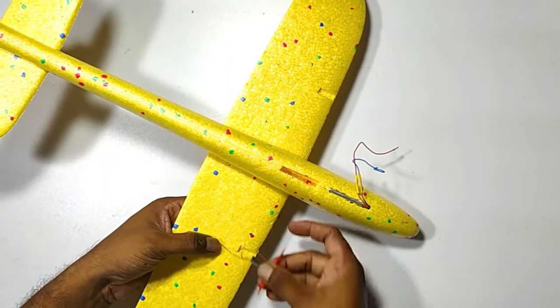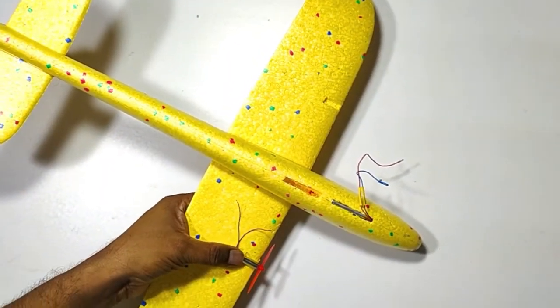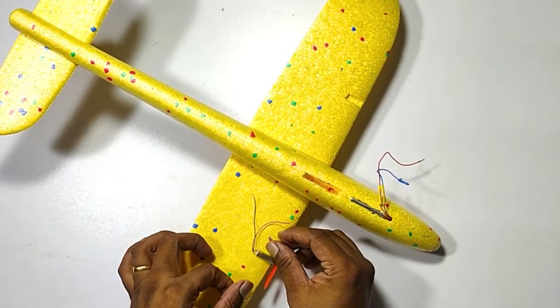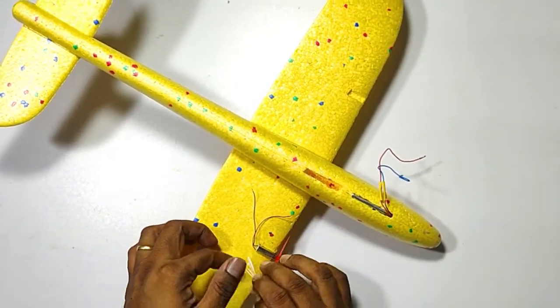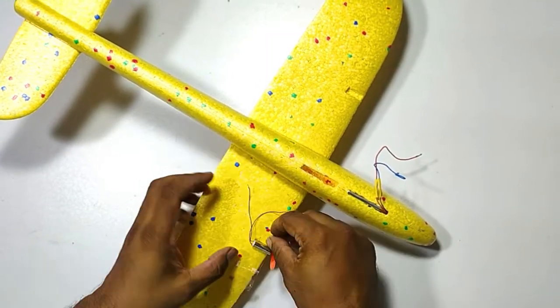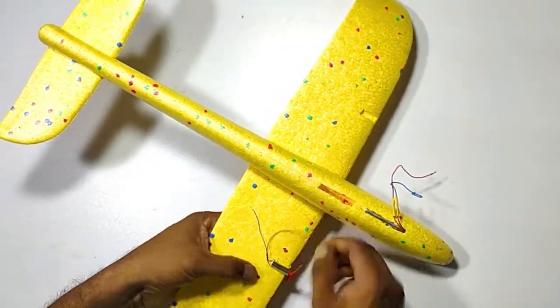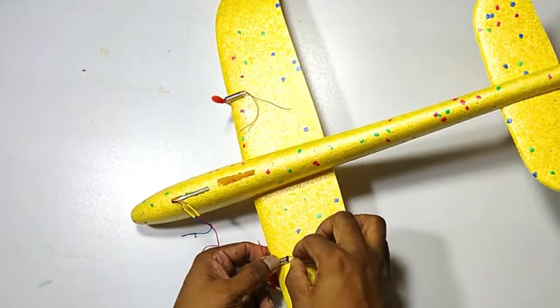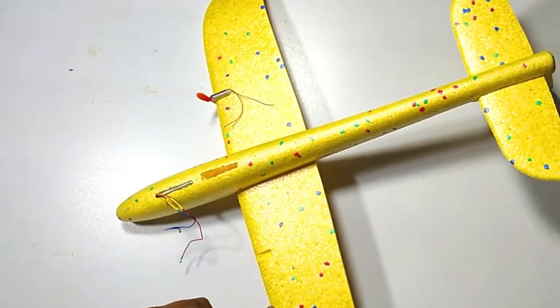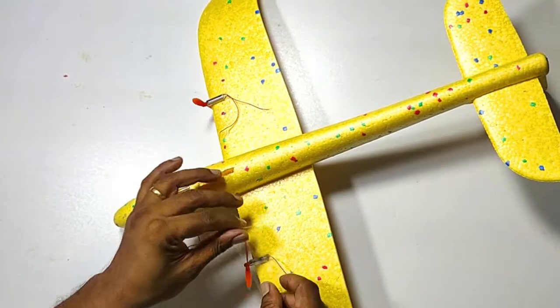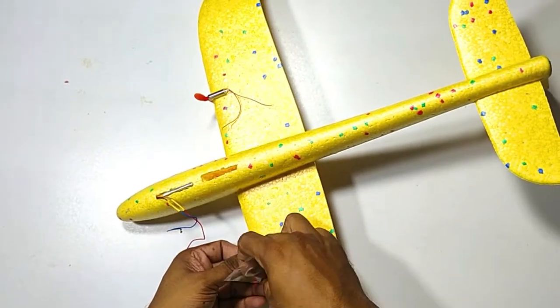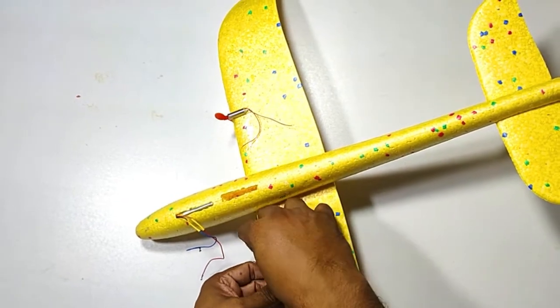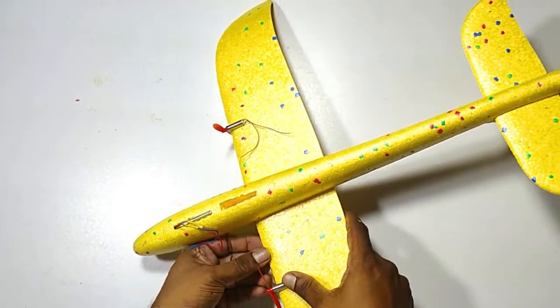So now we are fixing the motor in the slots using a transparent tape. So that it looks very clean and proper. So both sides we are fitting these motors. Be ensure that we should fix this motor in straight, very straight.